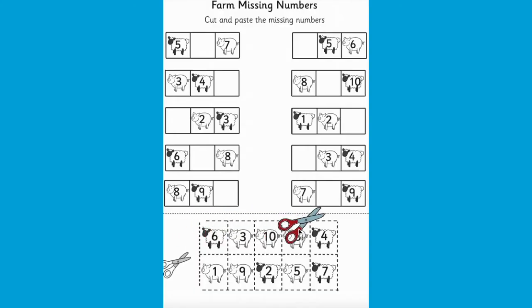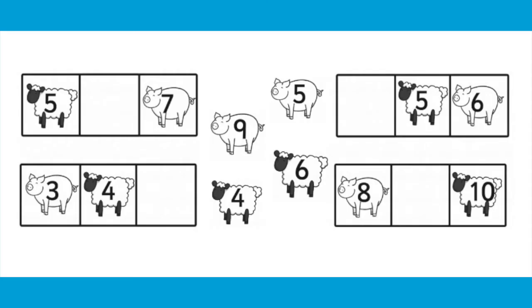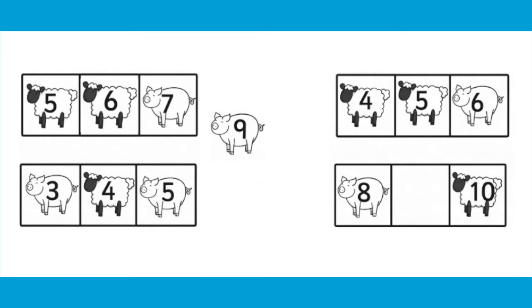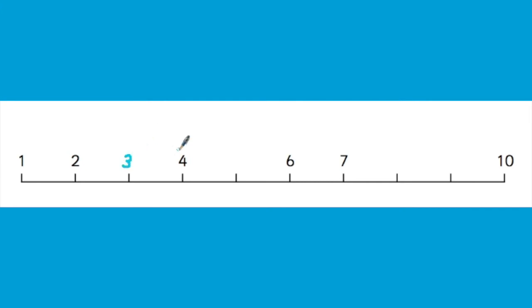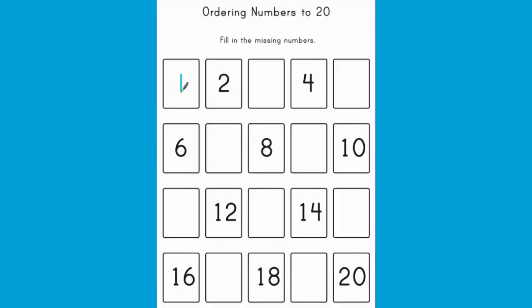Here are some ideas of different ways you could teach a child about missing numbers. You could use one of our themed missing number cut and stick activities. You could practice missing numbers on a number line. Or maybe you could teach your child to become confident with missing numbers with an ordering activity.